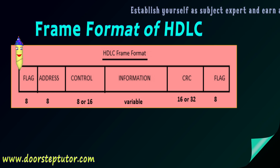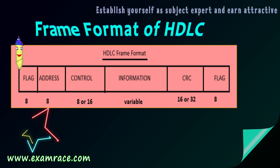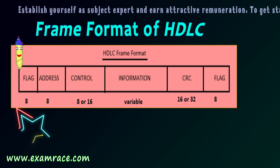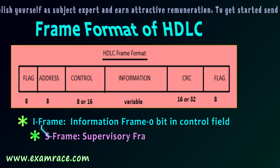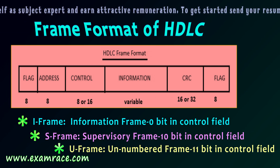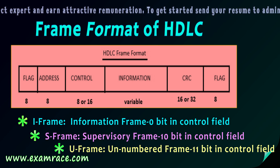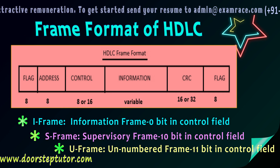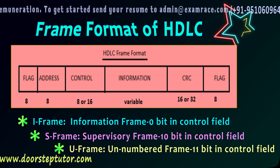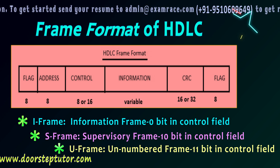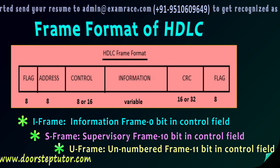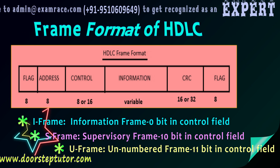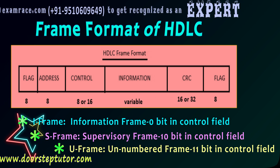The address field carries the source and destination addresses. The control field determines which frame type is being sent: I-frame (information frame) uses a leading 0 bit; S-frame (supervisory frame) uses 1-0 in the control field; and U-frame (unnumbered frame) is indicated by 1-1 bits. After the information field and CRC, the frame ends with the flag. This is the complete HDLC frame format.